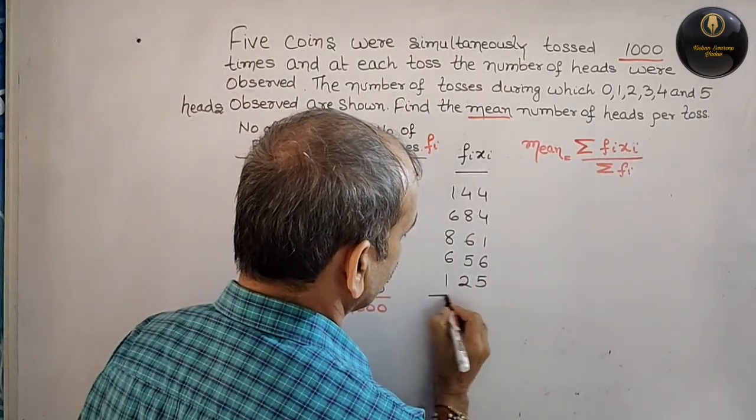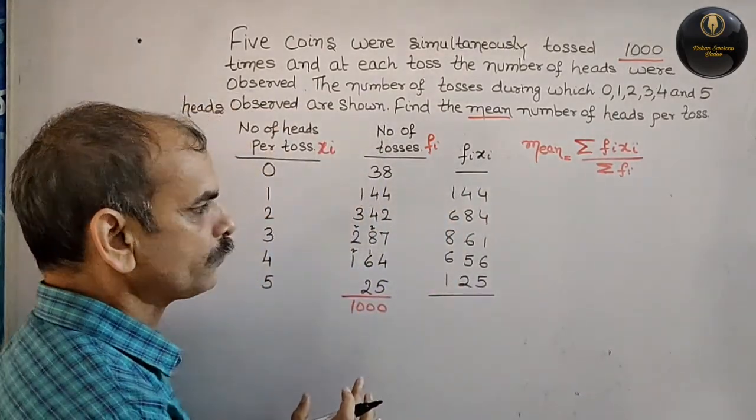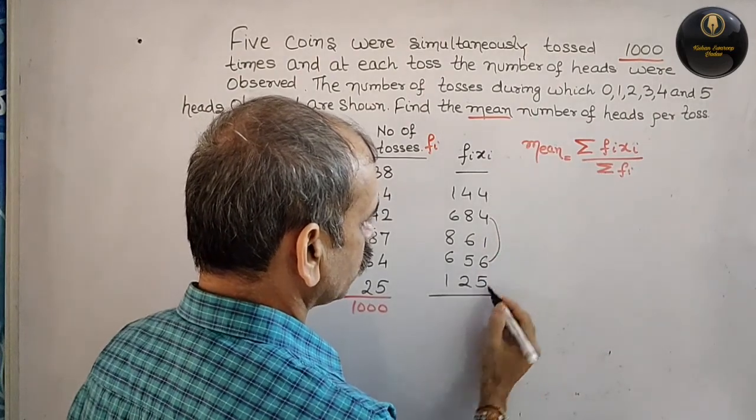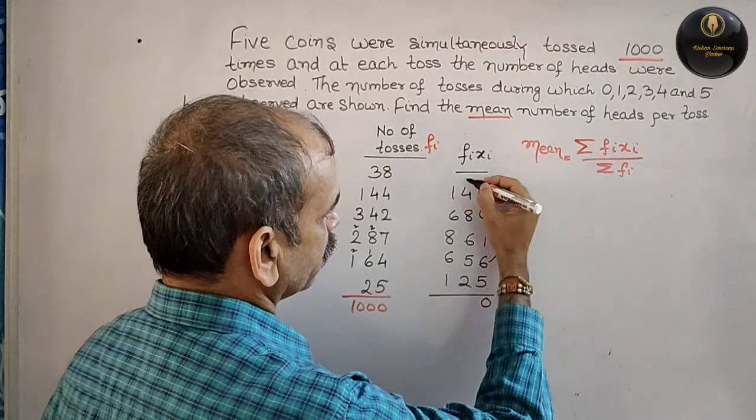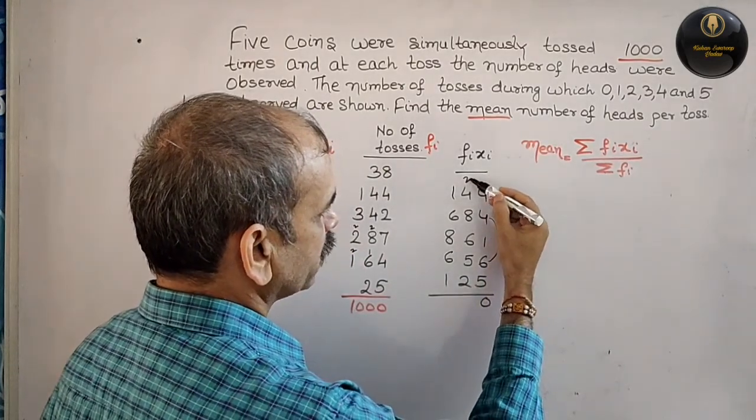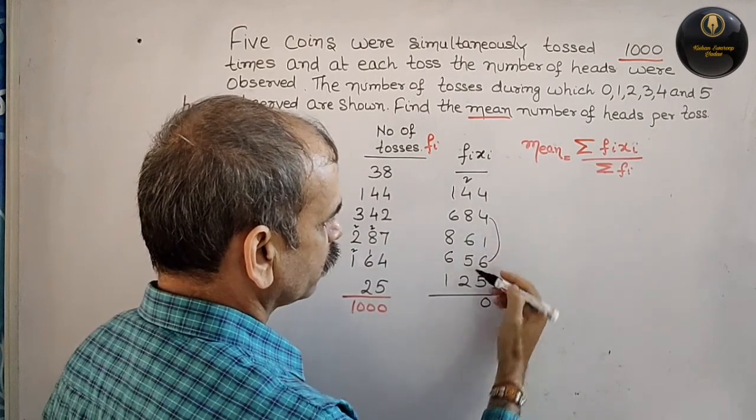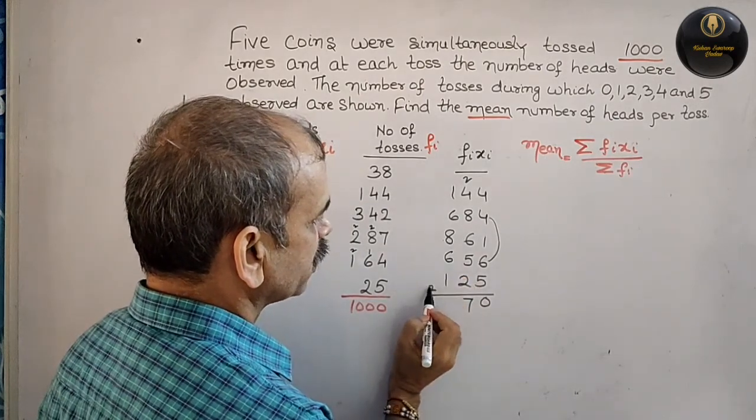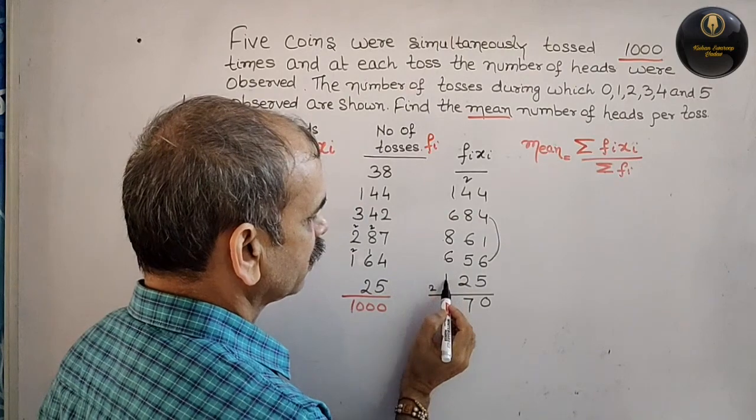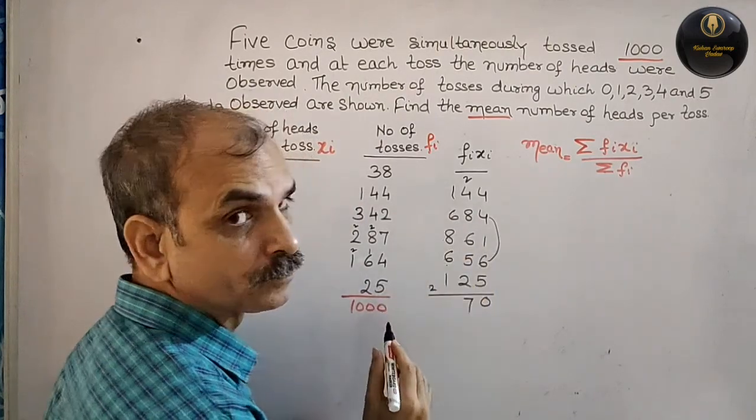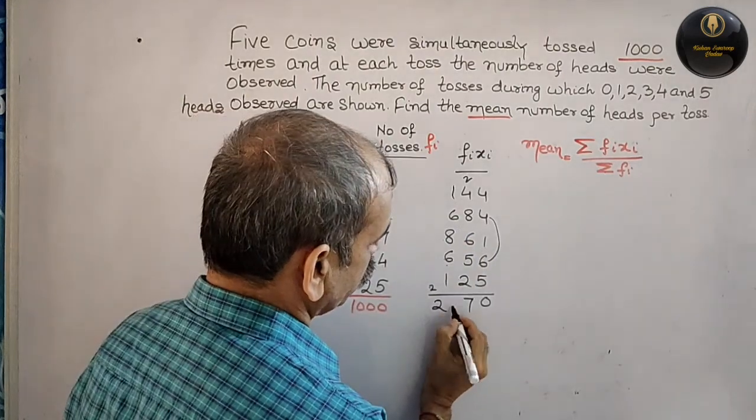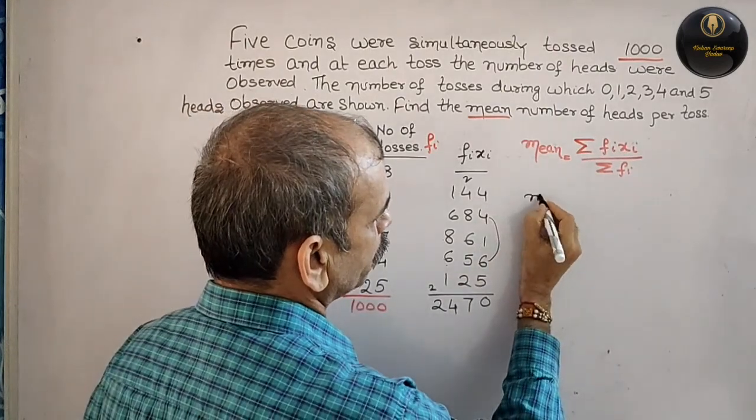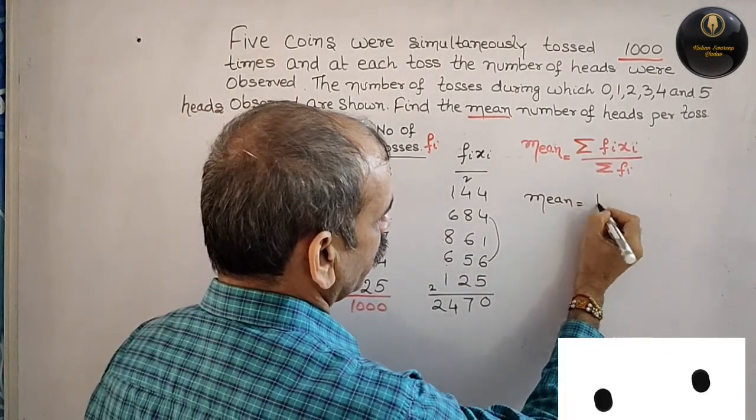Now we add these products together. Adding column by column: 8 plus 2 is 10, 10 and 10 is 20 plus 7 is 27, and continuing through we get 2470.